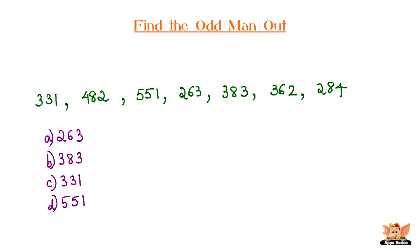The odd one out is B. In the other numbers, multiply the first and third digits to get the middle number. But this is not so for 383. Hence, B is the odd one out.